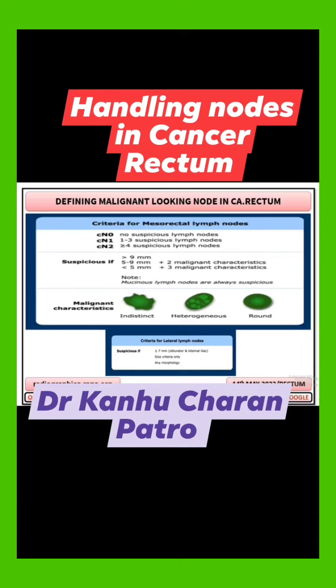Remember, any node which is indistinct, heterogeneous, or round is taken as a malignant-looking node. If any mesorectal node is more than 9 mm, it is taken as positive. Nodes of 5 to 9 mm with 2 malignant characteristics are also taken as positive.